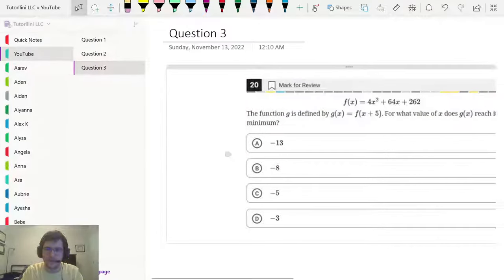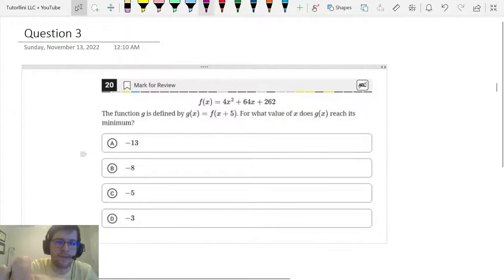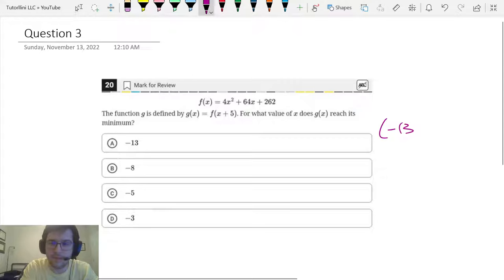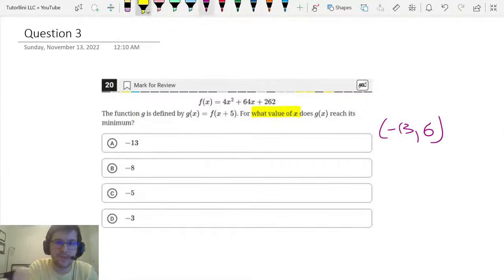And it is negative 13 comma 6. Let's write that down. Negative 13 comma 6. Again, it says for what value of x. So we're gonna go with the x value, which is negative 13. And that is our answer. Answer choice A.